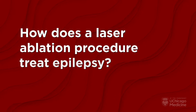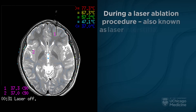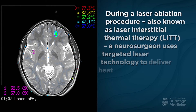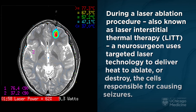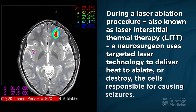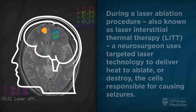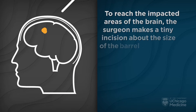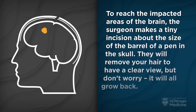How does a laser ablation procedure treat epilepsy? During a laser ablation procedure, also known as laser interstitial thermal therapy — LITT — a neurosurgeon uses targeted laser technology to deliver heat to ablate or destroy the cells responsible for causing seizures. To reach the impacted areas of the brain, the surgeon makes a tiny incision about the size of the barrel of a pen in the skull.